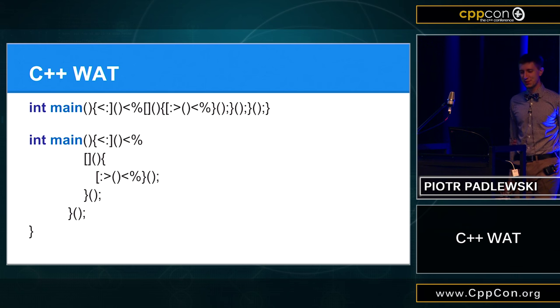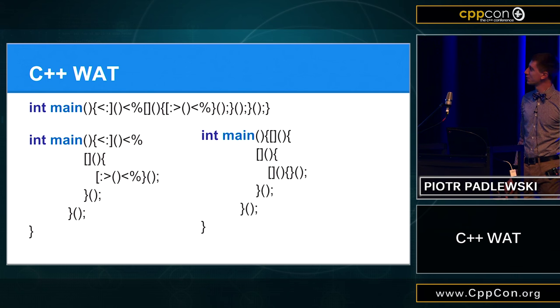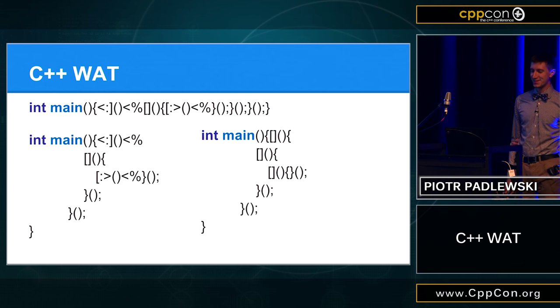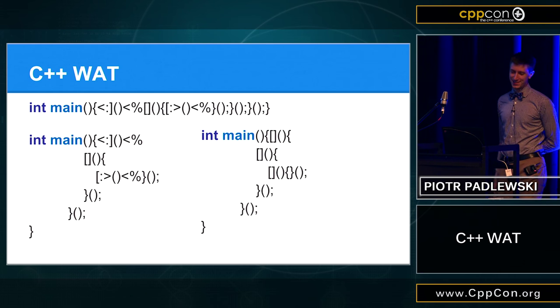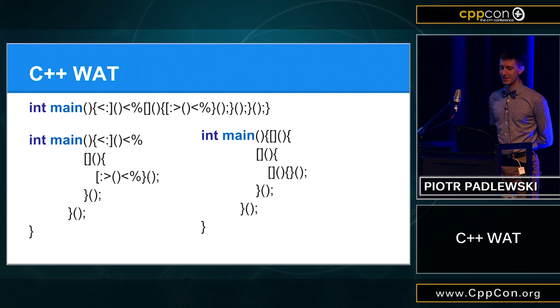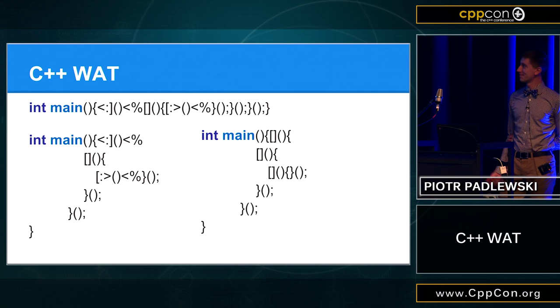And this code is equivalent to this code, which is empty lambda code inside lambda, inside lambda. So, it does nothing. And this compiles because we have diagraphs in C++. What?